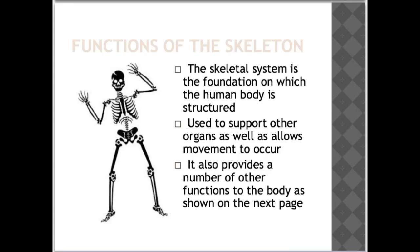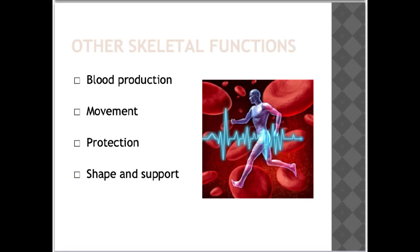The skeletal system is a foundation on which the human body is structured. It's used to support other organs as well as allowing movement to occur. It also provides a number of other functions to the body which we'll discuss briefly. Blood cells are produced in the bone marrow of long bones such as the humerus.